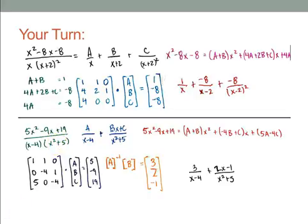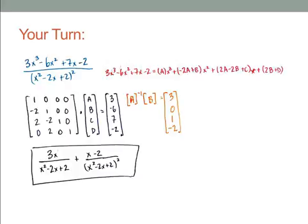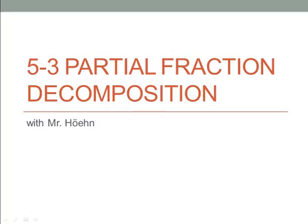And now for the final level — the boss problem. Pause the video and see if you end up with the same five checkpoints of work. That's a big four-by-four matrix, but the answer is 3x over (x squared minus 2x plus 2) plus (x minus 2) over (x squared minus 2x plus 2) squared. If you got all three practice problems correct, you're done. Partial fraction decomposition with Mr. Hayne — until next time.